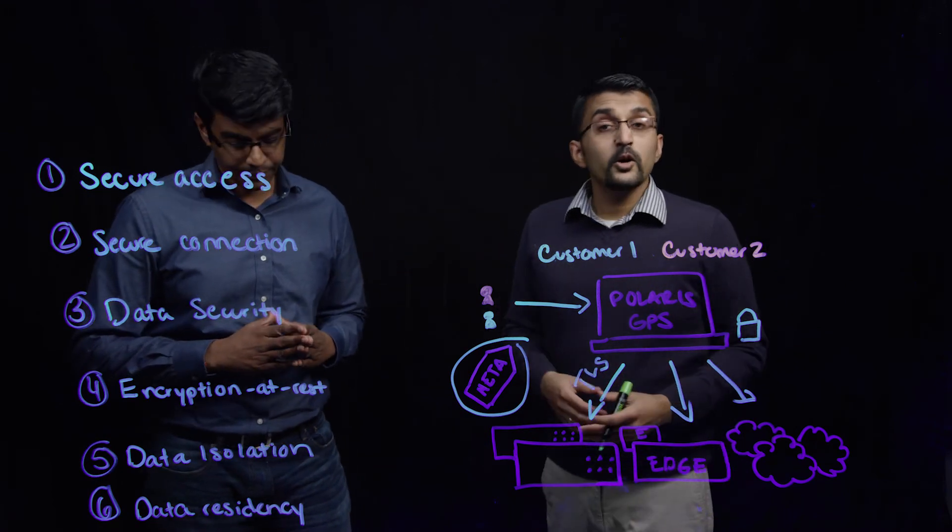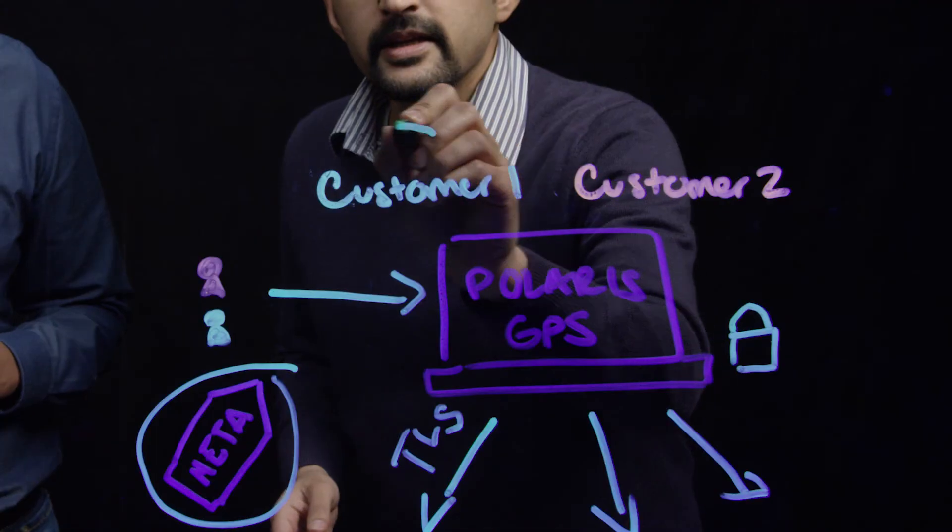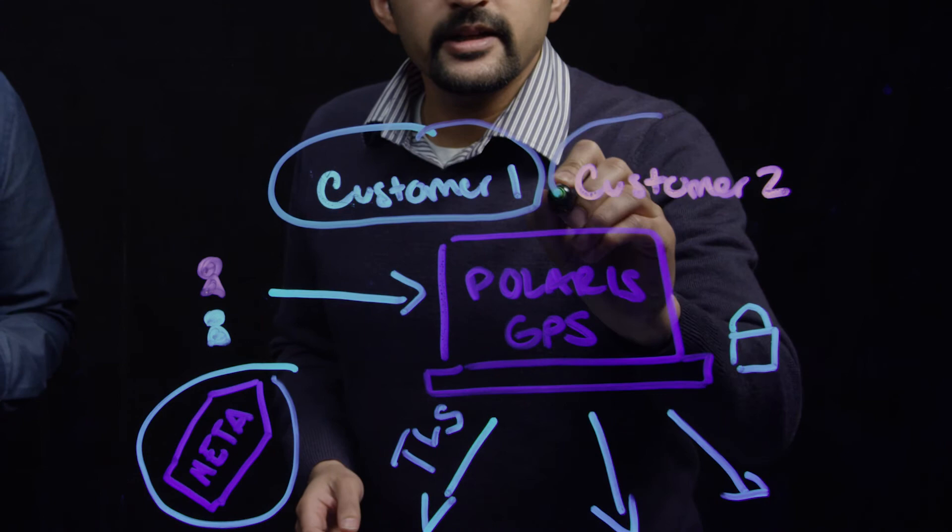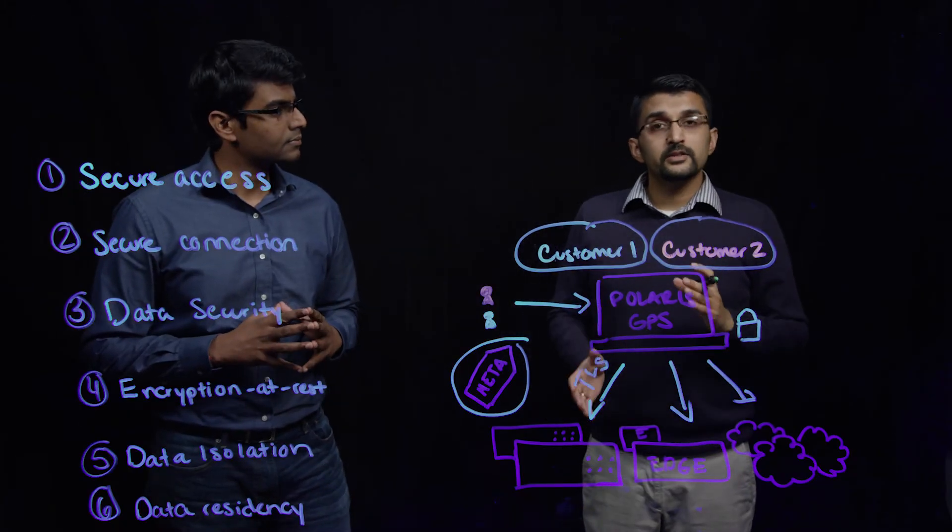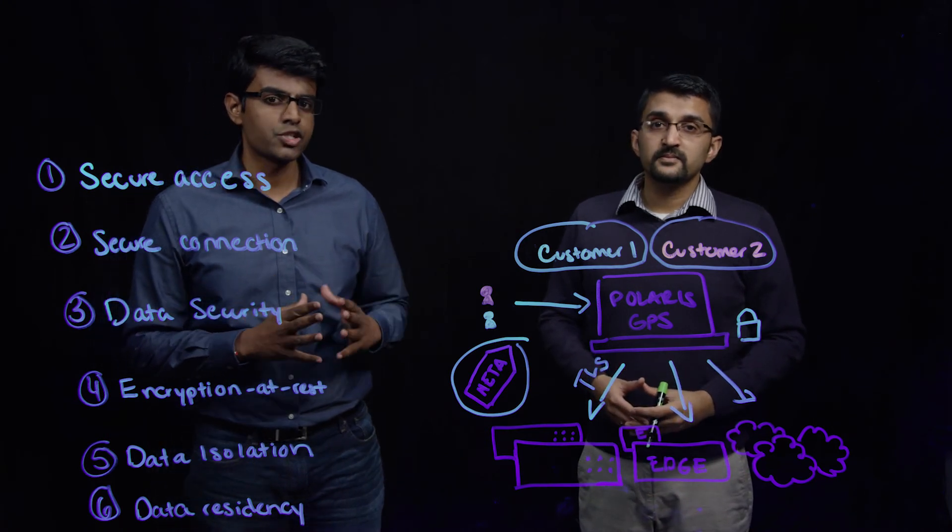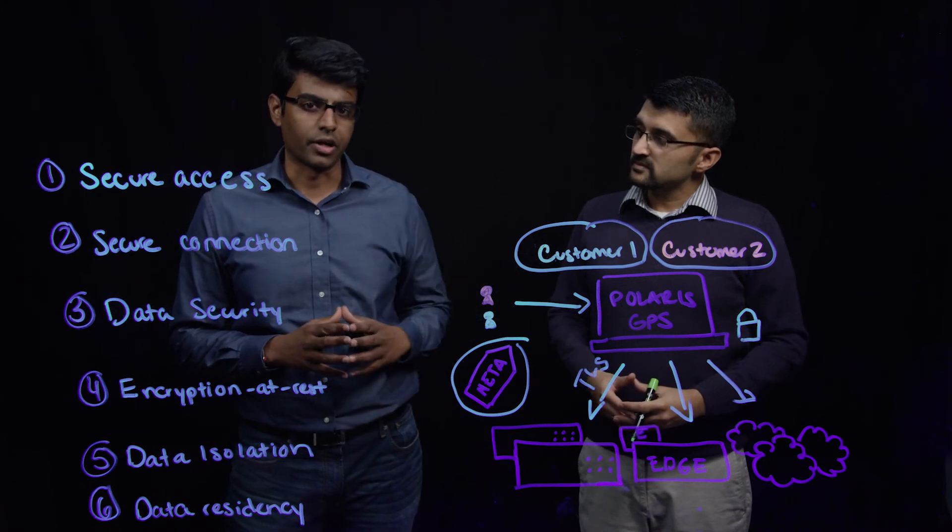Further, we ensure data isolation protection between any customers on Polaris. Each customer on Polaris is isolated into a completely different database, ensuring that there is no data leakage between any of our customers. This ensures that one customer has no visibility into the data of another customer.